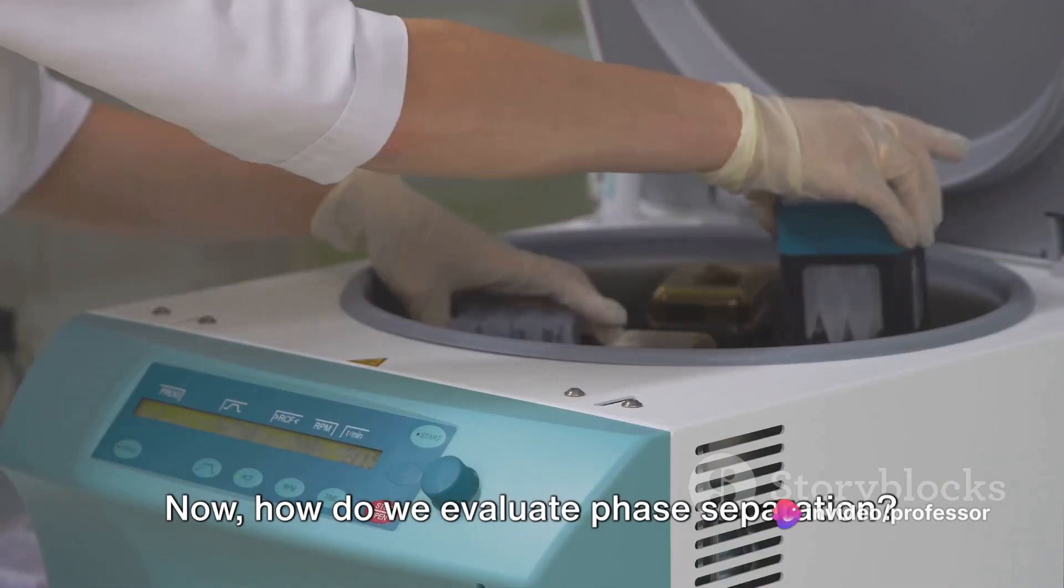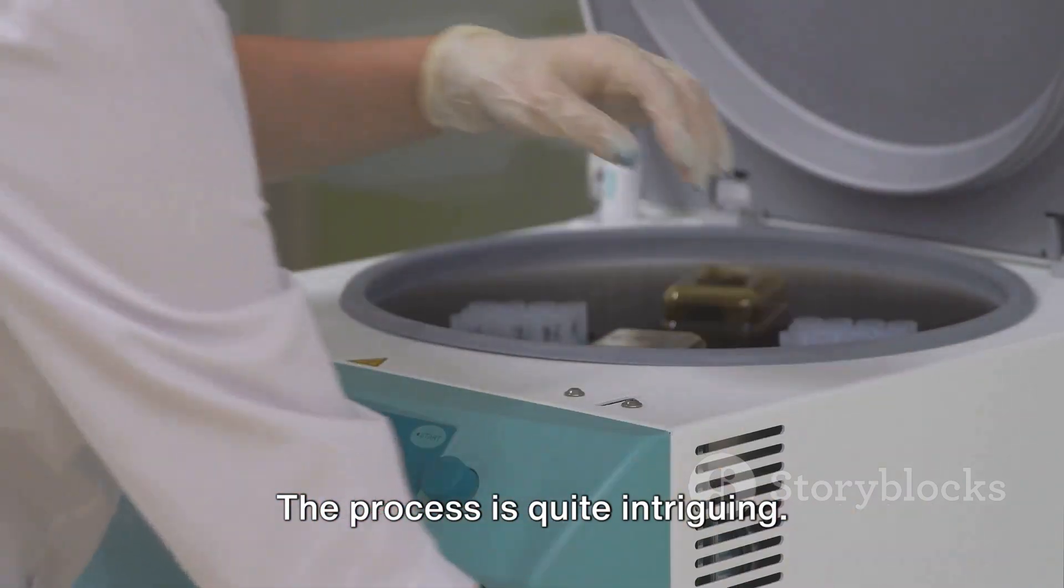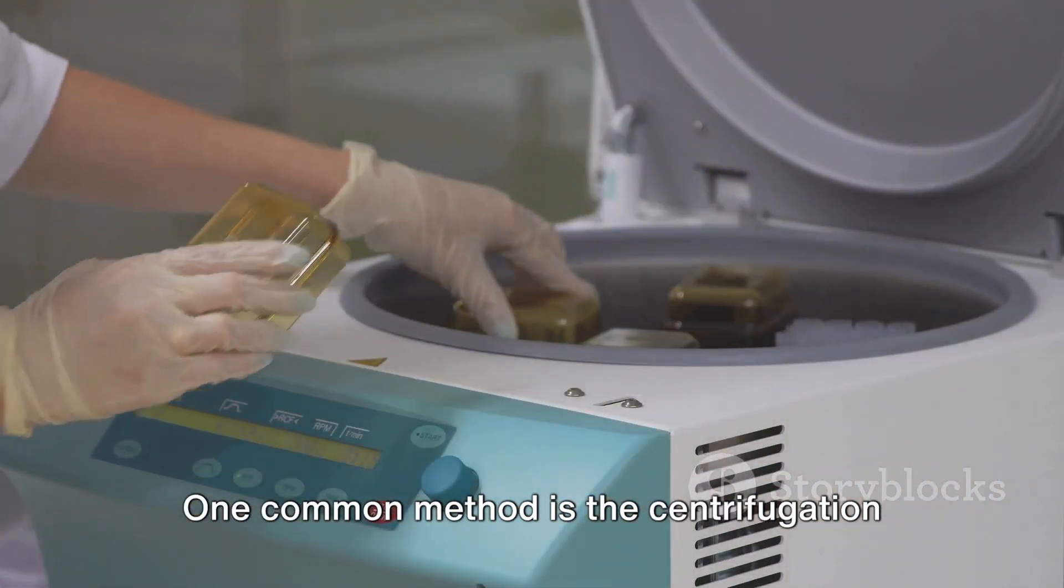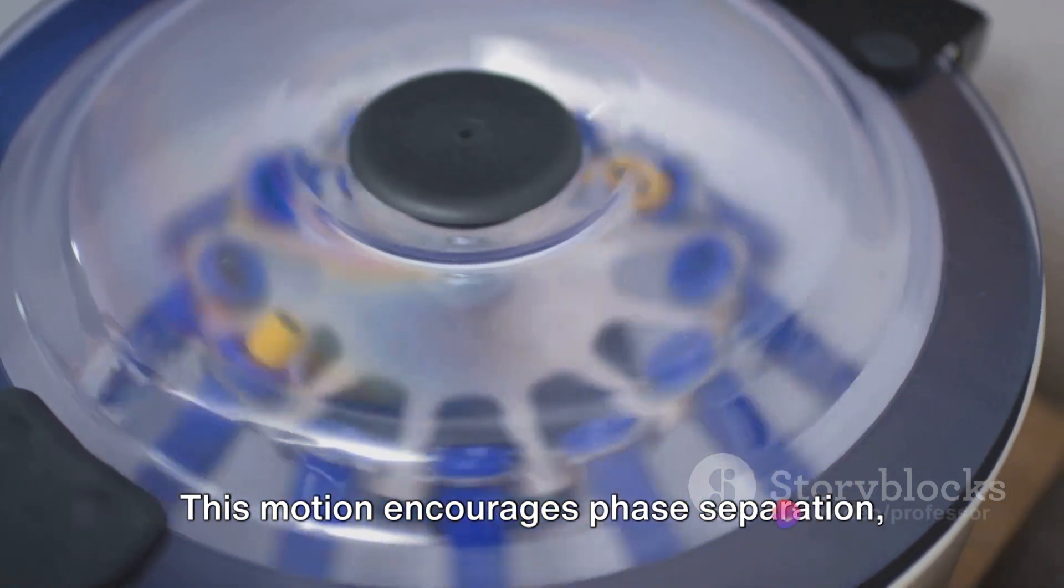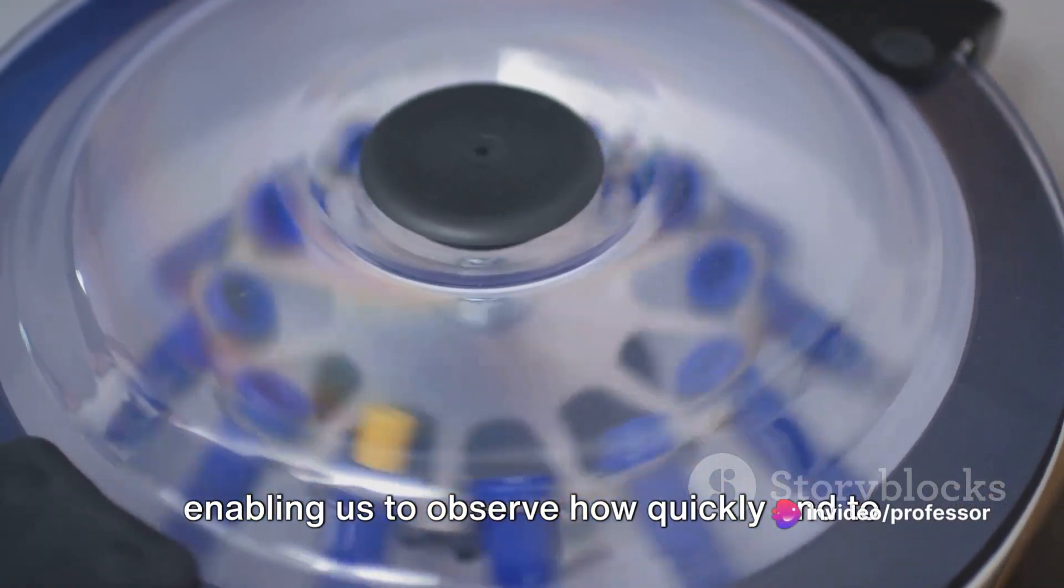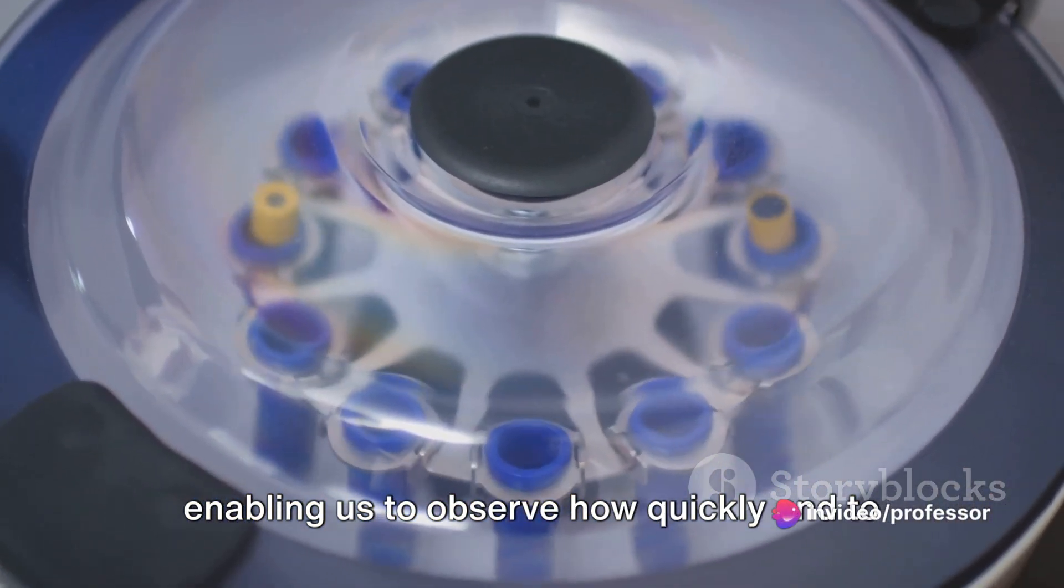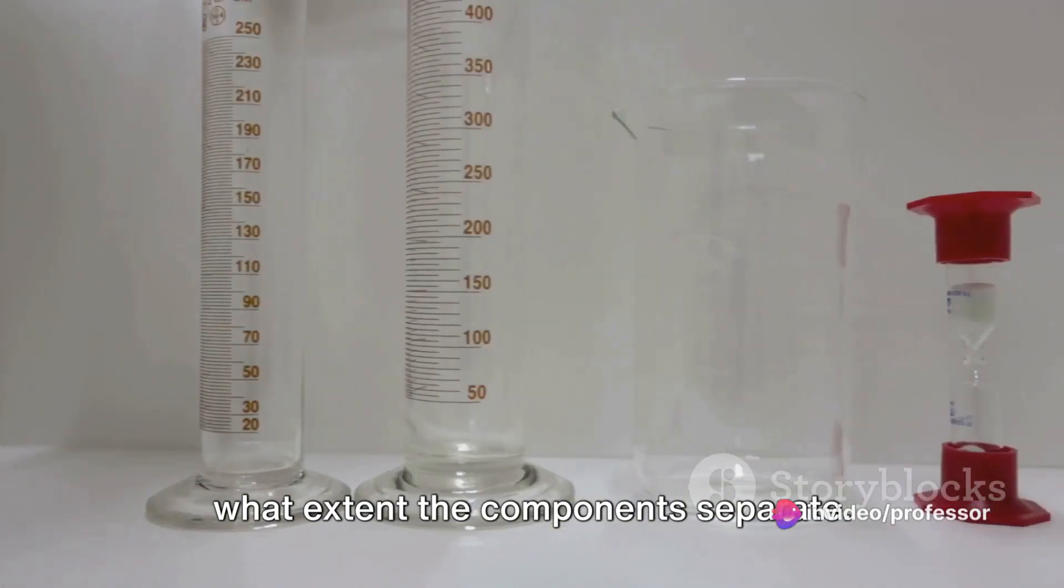Now, how do we evaluate phase separation? The process is quite intriguing. One common method is the centrifugation test, where the emulsion is spun at high speeds. This motion encourages phase separation, enabling us to observe how quickly and to what extent the components separate.